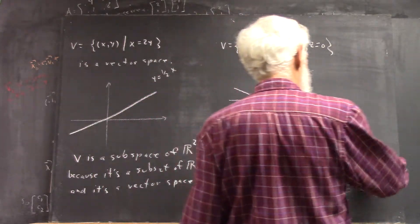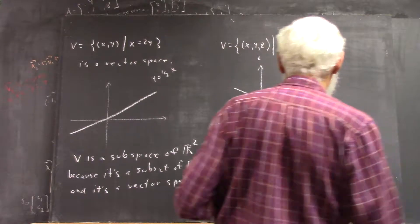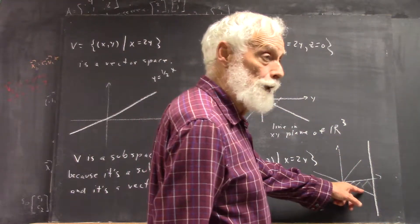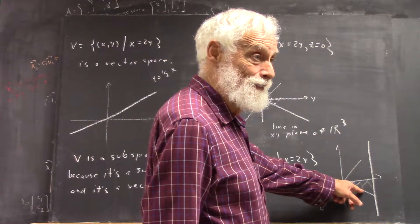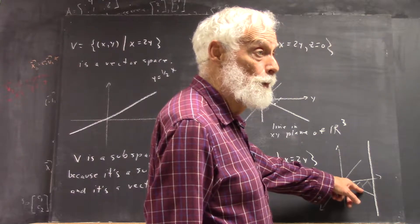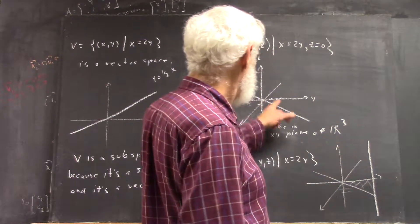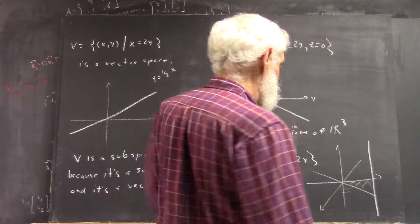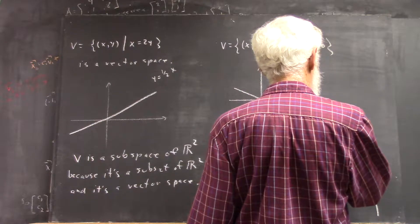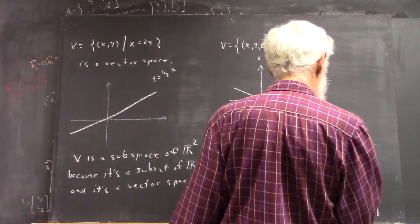Every point above and below, because for any point directly above any point on this one, if it's directly above a point here, the X and Y coordinates haven't changed, have they? And X is still equal to 2Y. So you can just take all the points above and below this.